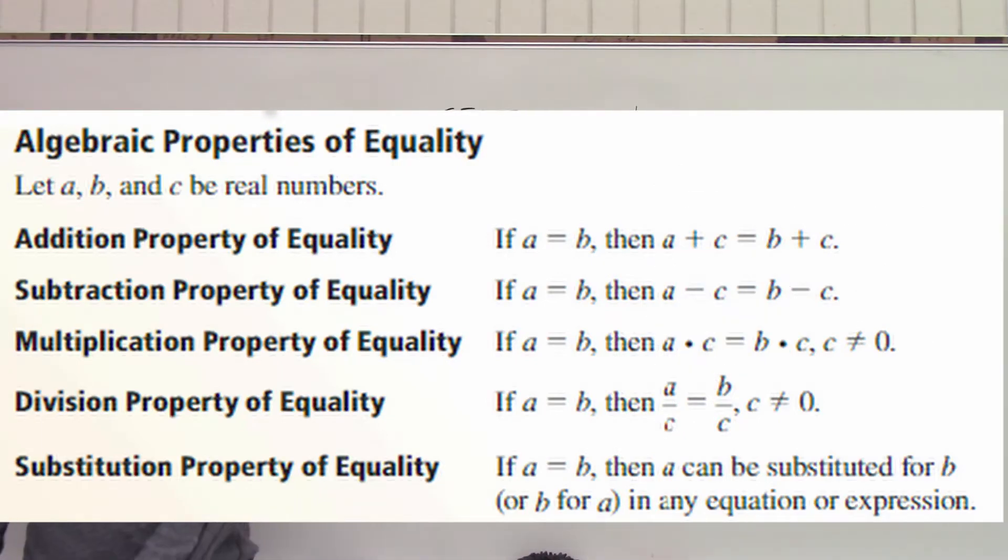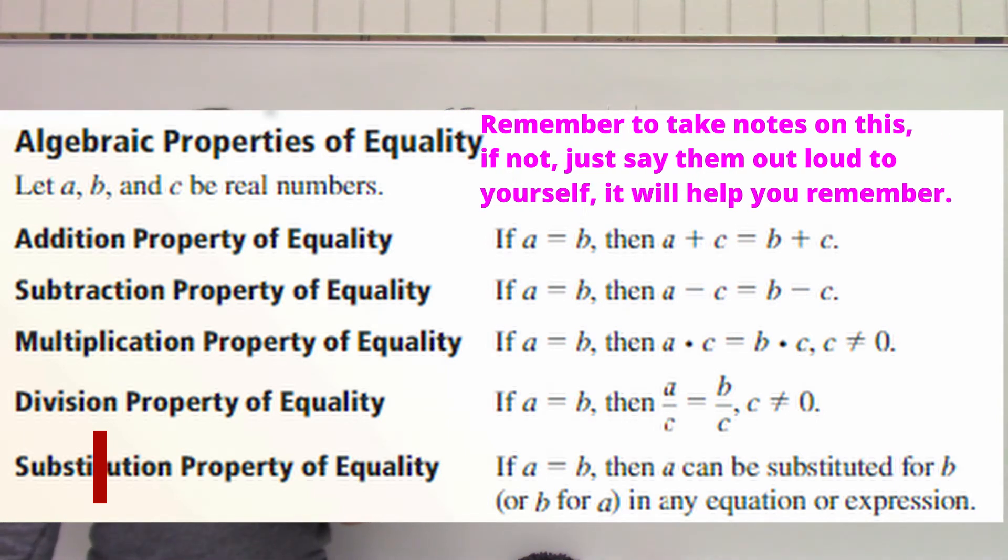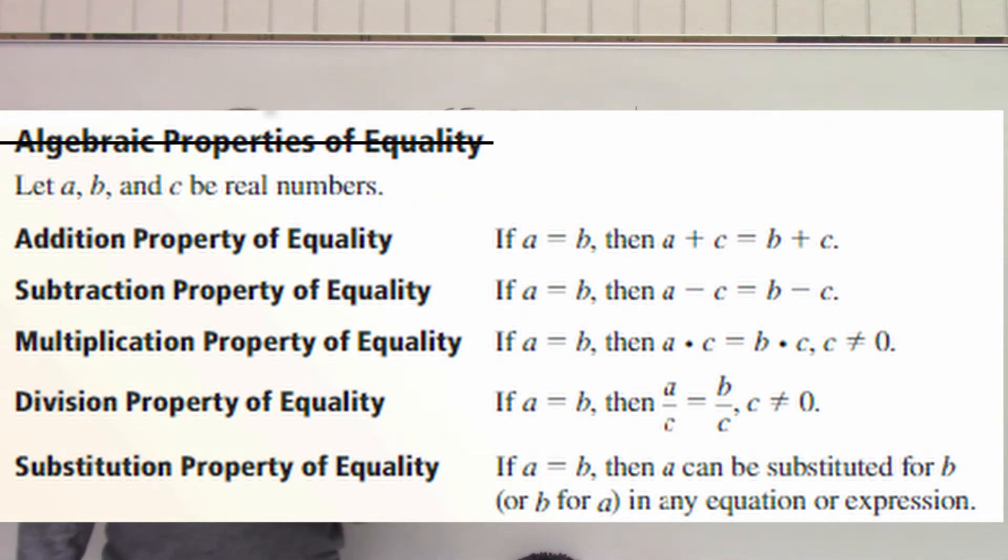We've already used some of these, but I just wanted to show you each step here. So we have the addition property of equality. And all that means is you can add the same thing to both sides, just like we did in our proof. The subtraction property of equality, same thing. We use that. You can subtract the same thing from both sides of your equal sign.